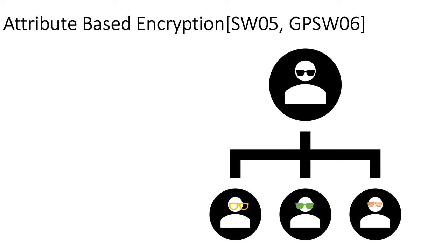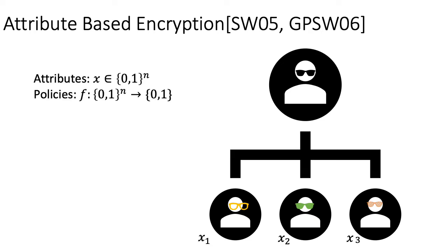Such a notion was formulated as attribute-based encryption in two papers: Sahai-Waters 2005 and Goyal-Pandey-Sahai-Waters 2006. In an attribute-based encryption scheme, every user has an attribute as an n-bit binary string, and we have policies which can be seen as boolean functions that take in n-bit input. These boolean functions evaluate on the attribute and output 0 for reject and 1 for accept, meaning the attributes satisfy this specific policy we want to deploy.